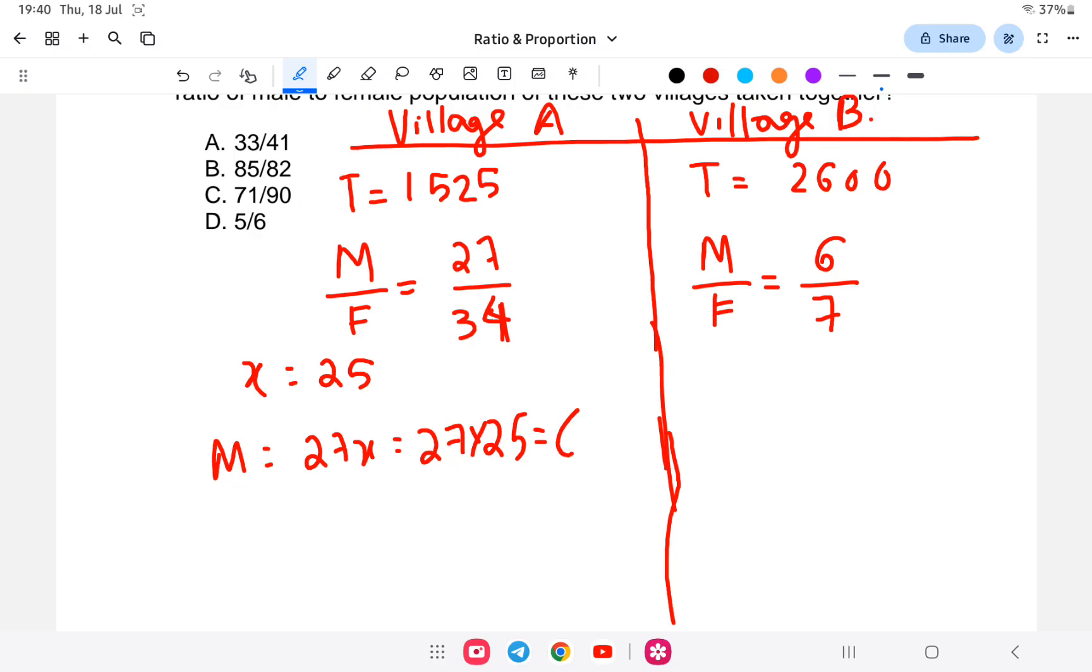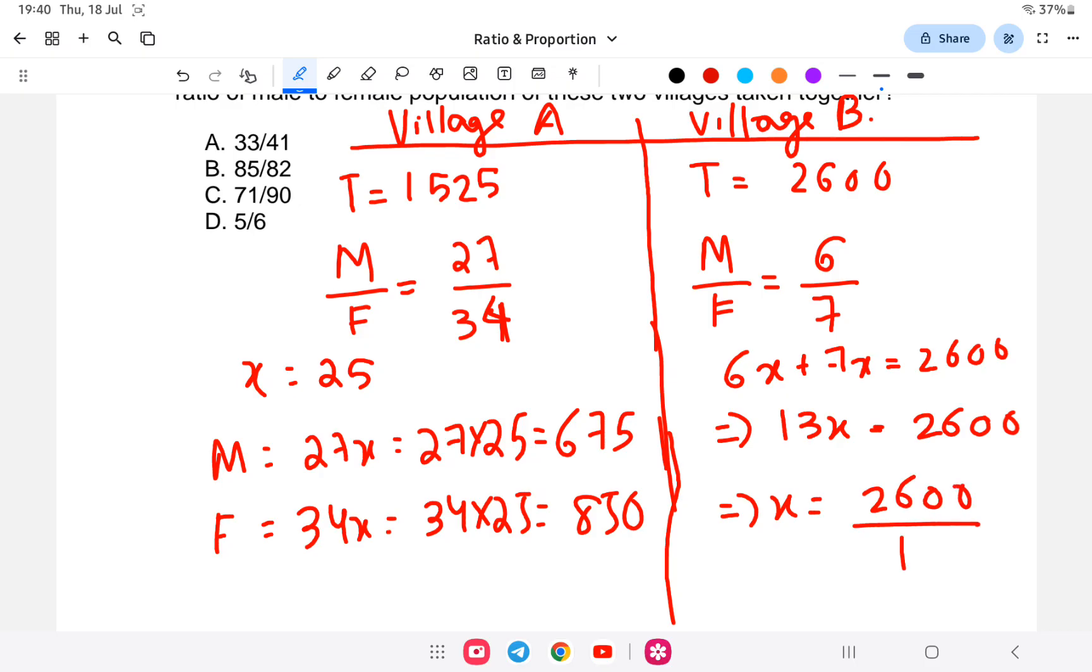Similarly for Village B, the ratio is 6x:7x, and total is 2600. So 6x + 7x = 13x = 2600, which means x = 200. Therefore x value is 200.